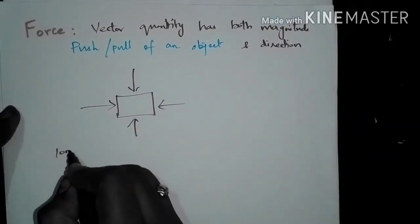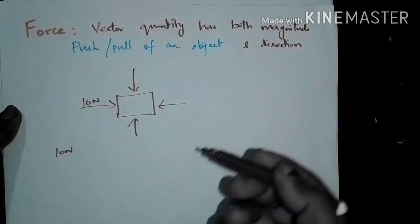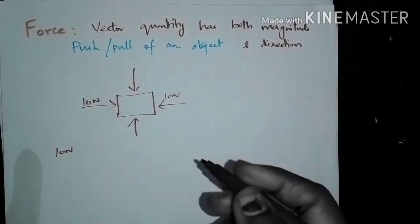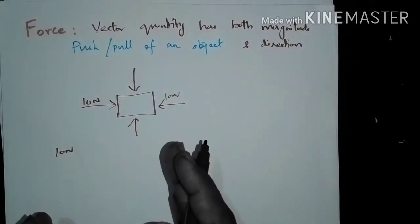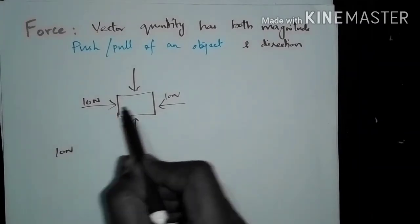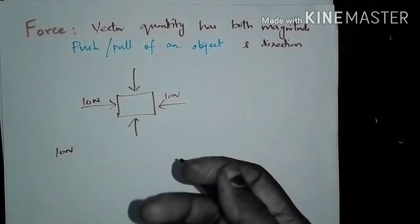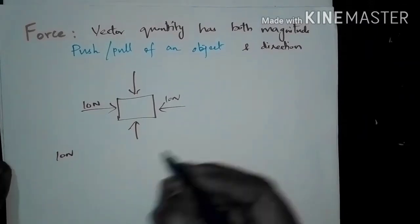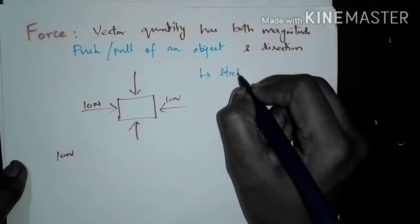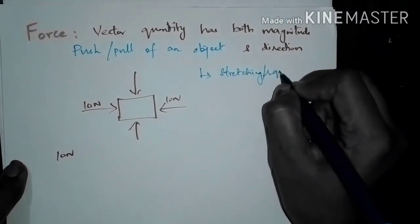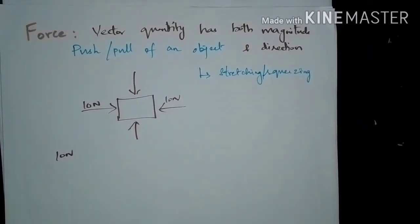For example, if a force of 10 Newtons is applied in one direction and also 10 Newtons in the opposite direction, the object cannot move — it remains at rest, since both forces have the same magnitude and are balanced. Other terms that represent force are stretching and squeezing. Force can be in any direction, and both direction and magnitude must be represented.